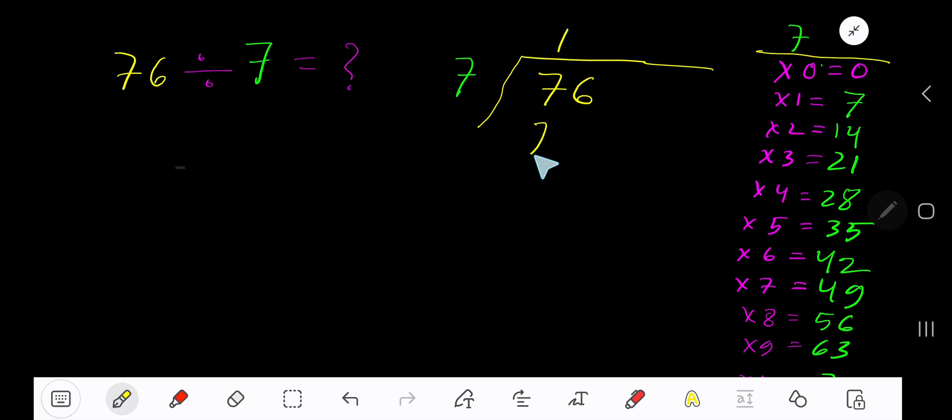1 times 7 is 7. Subtract, then bring down the next digit. 7 goes into 6, which is 6. How many times? 0 times, as 6 is less than 7. 0 times 7 is 0. Subtract 6, so our answer is 10 remainder 6.